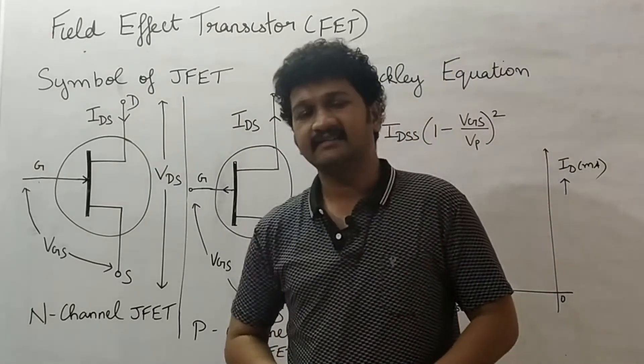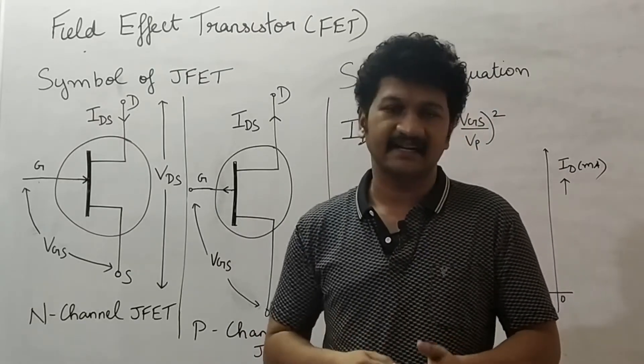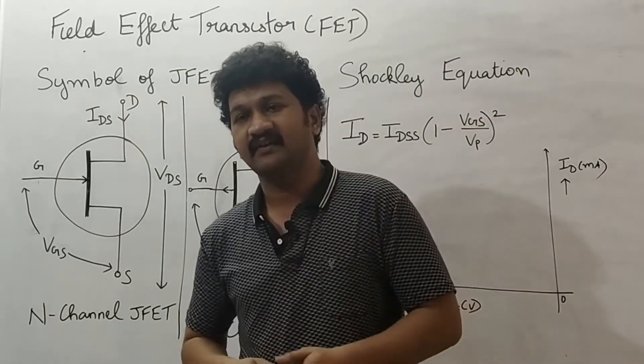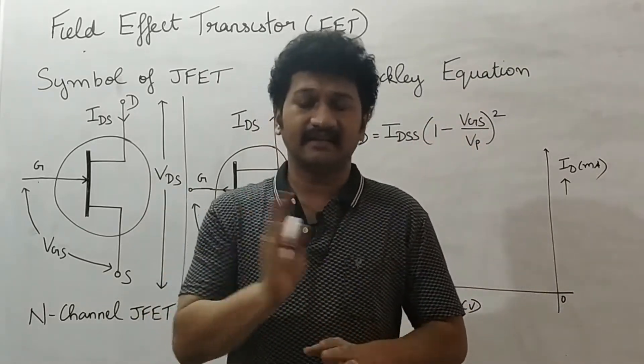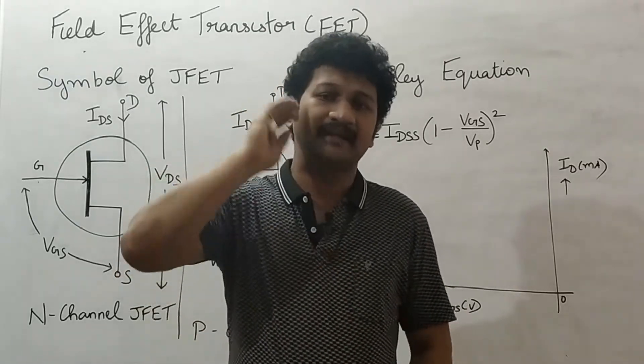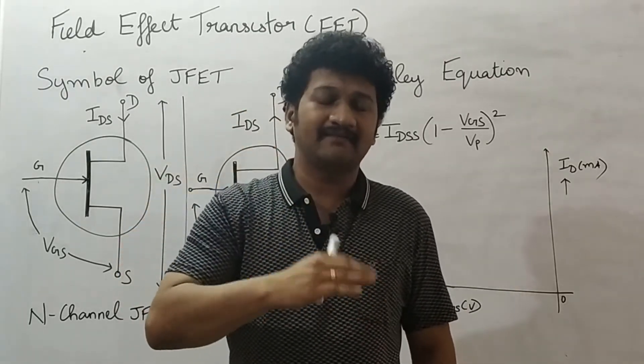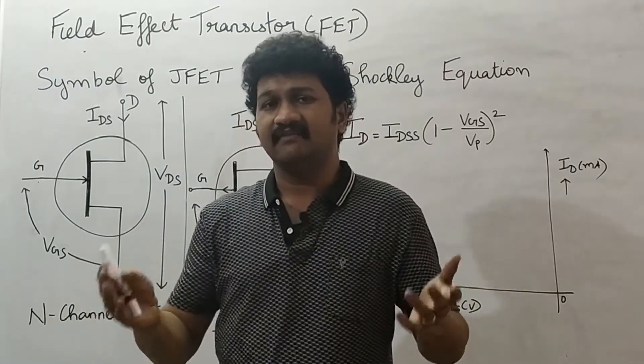As discussed earlier, there are two types of JFET: N channel JFET and P channel JFET. In N channel JFET, the N channel will be at the middle and surrounded by the P layer at either sides. In P channel JFET, the P layer will be at the middle, which is a comparatively larger layer, and either side will have N layers.